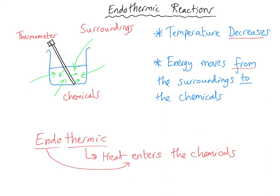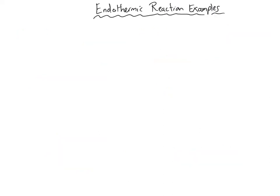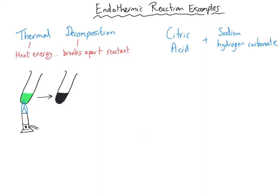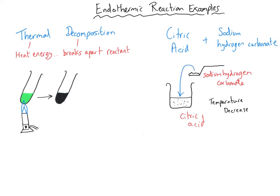There are far fewer examples of endothermic reactions compared to exothermic reactions. The first and most common is a thermal decomposition reaction, where heat energy comes from the surroundings — such as a Bunsen burner flame — and the chemicals decompose, falling apart into their products having taken in energy from the surroundings. A second example is a reaction between citric acid and sodium hydrogen carbonate, which involves a decrease in temperature as those chemicals react and pull in energy from the surroundings.